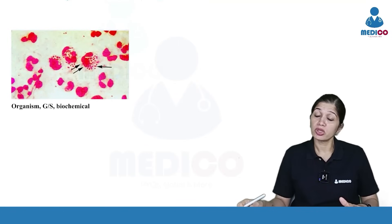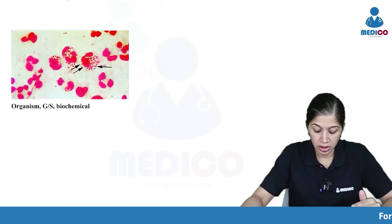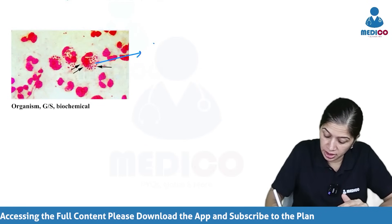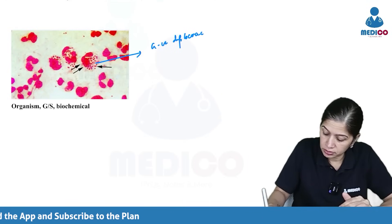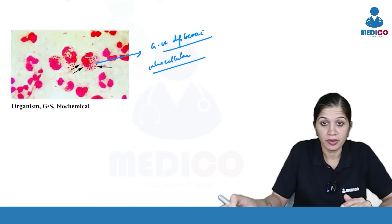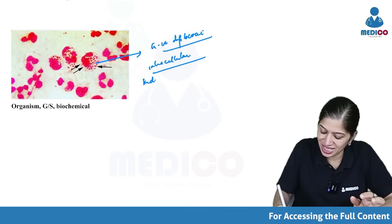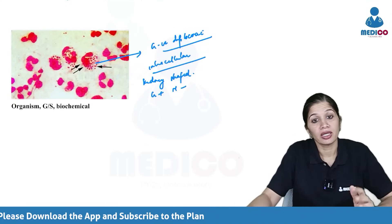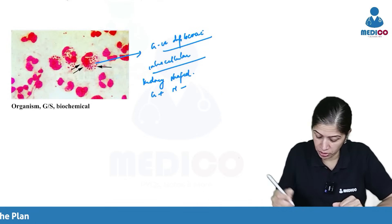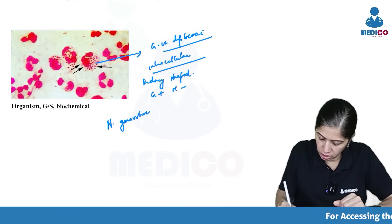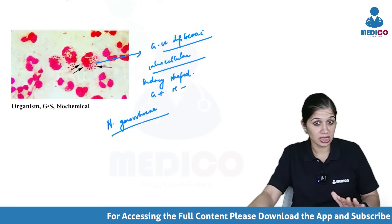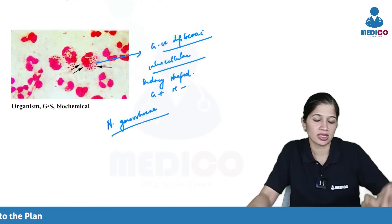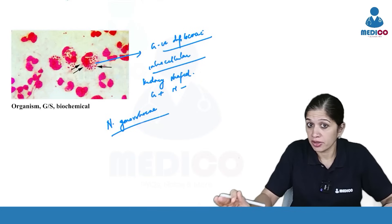This organism is obtained from the urethral smear of a patient with urethritis. You can see plenty of pus cells and gram-negative diplococci, but here they are predominantly intracellular. They are kidney-shaped, non-capsulated, ferment only glucose — maltose is not fermented — and are normal flora of the genital tract. This is Neisseria gonorrhoeae, causing the sexually transmitted disease gonorrhea, presenting with urethritis and cervicitis.